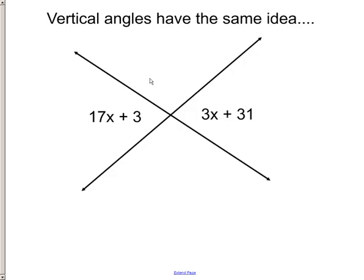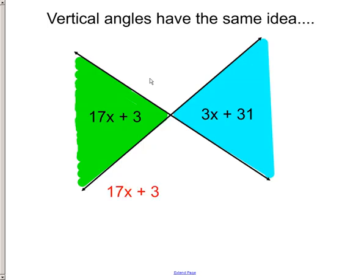Vertical angles are the exact same idea. Just remember, though, that this angle on the left, that green angle, is actually the same value as the blue angle. And so when you build your equation, don't add them together. Vertical angles are actually equal to each other. So you've got to have the green angle equal to the blue angle.